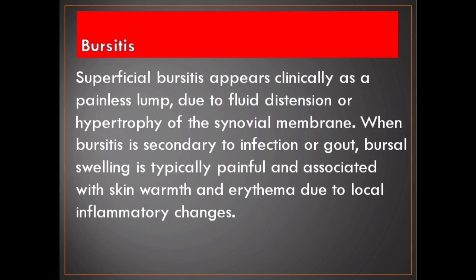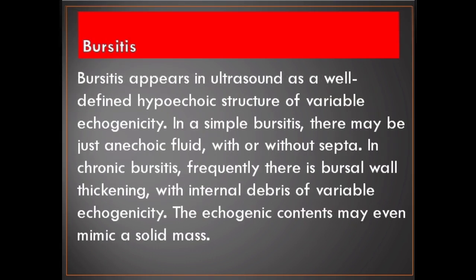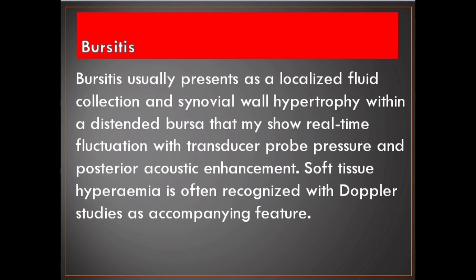Superficial bursitis appears clinically as a painless lump due to fluid distension or hypertrophy of the synovial membrane. When bursitis is secondary to infection or gout, bursal swelling is typically painful and associated with skin warmth and erythema. Bursitis appears on ultrasound as a well-defined hypoechoic structure of variable echogenicity. In simple bursitis there may be just anechoic fluid with or without septa. In chronic bursitis, there is frequently bursal wall thickening with internal debris of variable echogenicity; the echogenic contents may even mimic a solid mass. Soft tissue hyperemia is often recognized with Doppler studies as an accompanying feature.